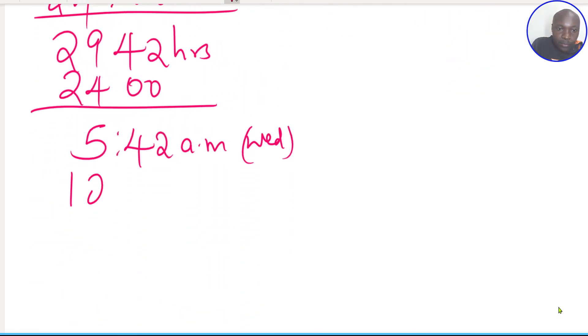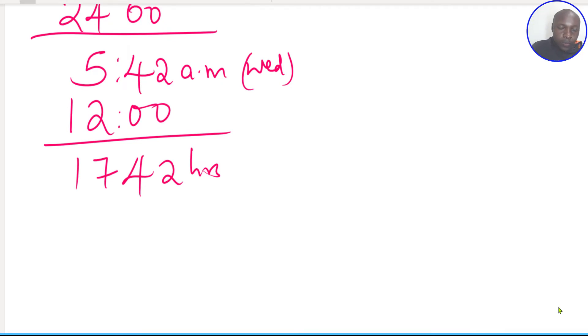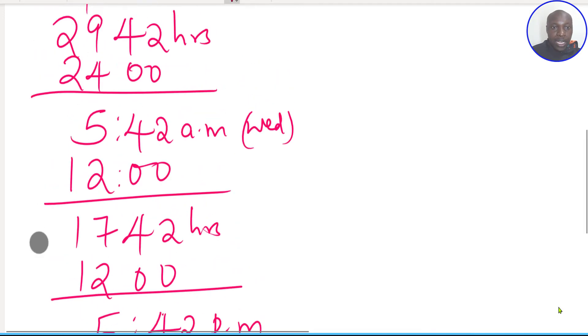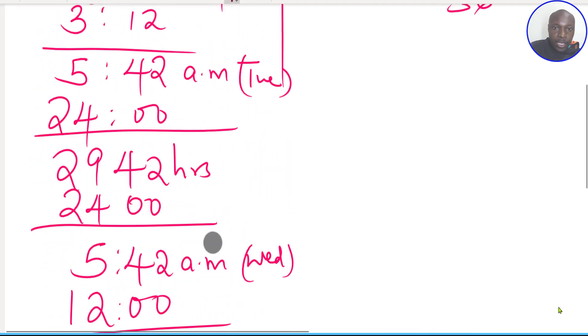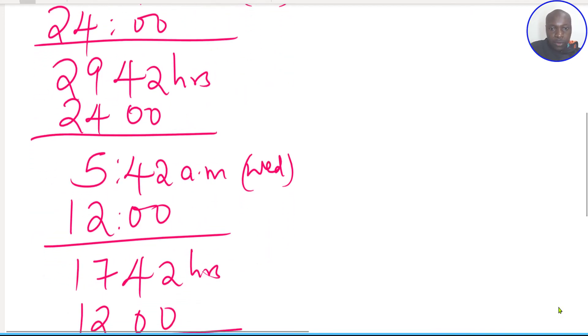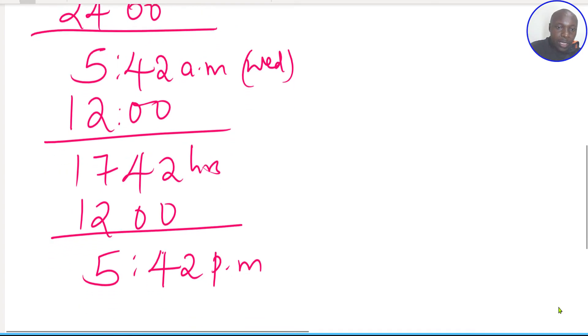On adding 12 hours this will give 17:42 hours. Converting this one into 12-hour clock system, we subtract 12 hours. And this should give 5:42 pm. So now we have added 36 hours by first adding 1 day to go to Wednesday 5:42 am. Then you add 12 hours, you get 5:42 pm.